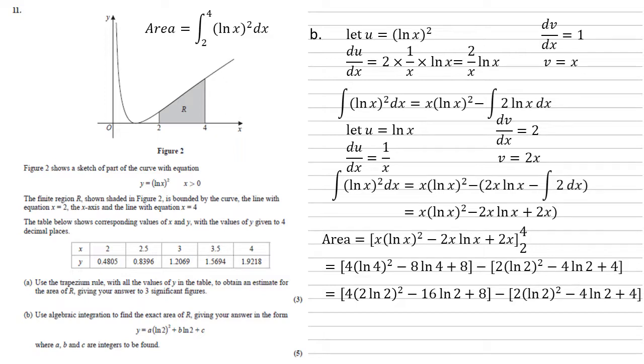Bringing that 2 out from the squared bracket, well that will become a 4, which times is with the 4 that's already there, to give 16 ln 2 squared minus 16 ln 2 plus 8 minus 2 ln 2 squared minus 4 ln 2 plus 4.